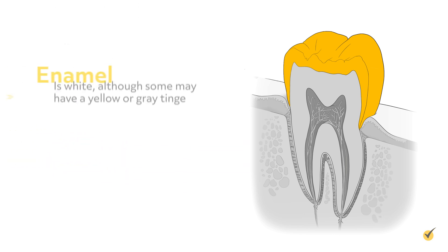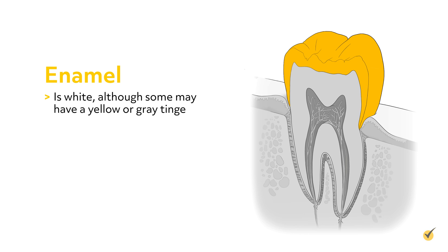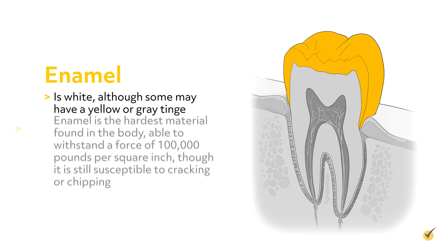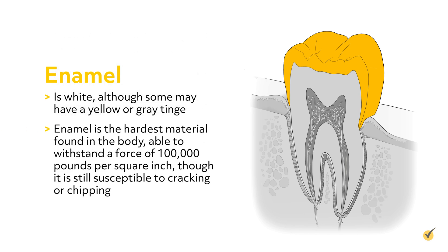Enamel is white, although some may have a yellow or gray tinge. Enamel is the hardest material found in the body, able to withstand a force of 100,000 pounds per square inch, though it is still susceptible to cracking or chipping.